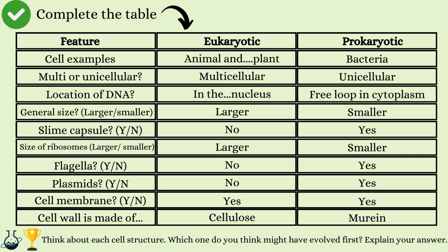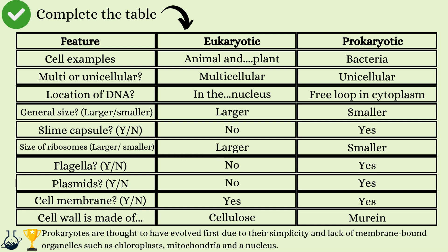Yes for both cell membranes. Eukaryotic cell walls — aka plant cell walls — are made of cellulose, whereas prokaryotic cell walls are made of murine. The challenge to think about which cell may have evolved first: eukaryotic cells are larger and more complex with more structures, so it would probably take them longer to evolve. Scientists theorise that prokaryotic cells evolved first due to their simplicity and lack of membrane-bound organelles like chloroplasts, mitochondria, and a nucleus.